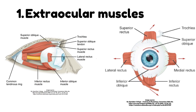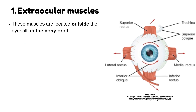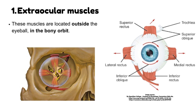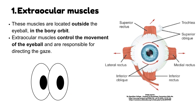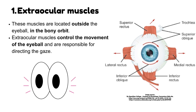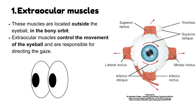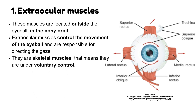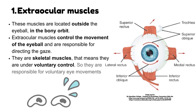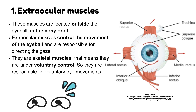Extraocular muscles. These muscles are located outside the eyeball, in the bony orbit. Extraocular muscles control the movement of the eyeball and are responsible for directing the gaze. They are skeletal muscles, meaning they are under voluntary control, so they are responsible for voluntary eye movements.